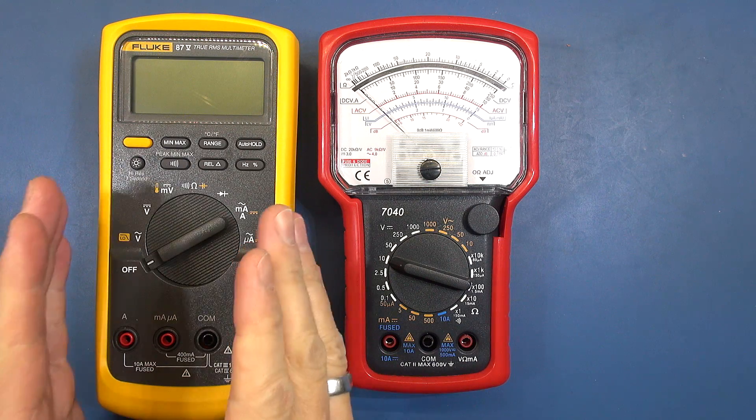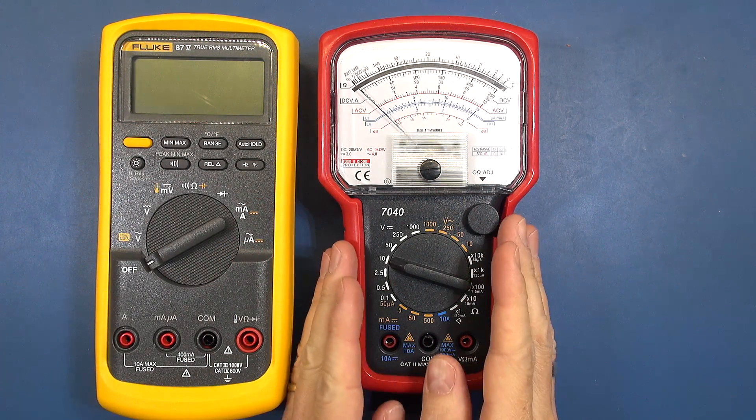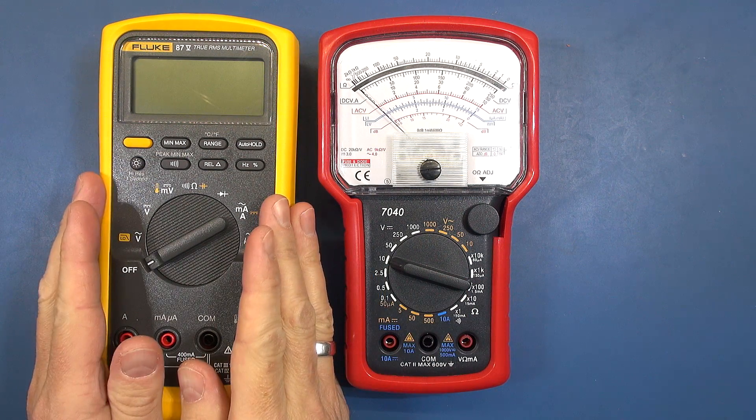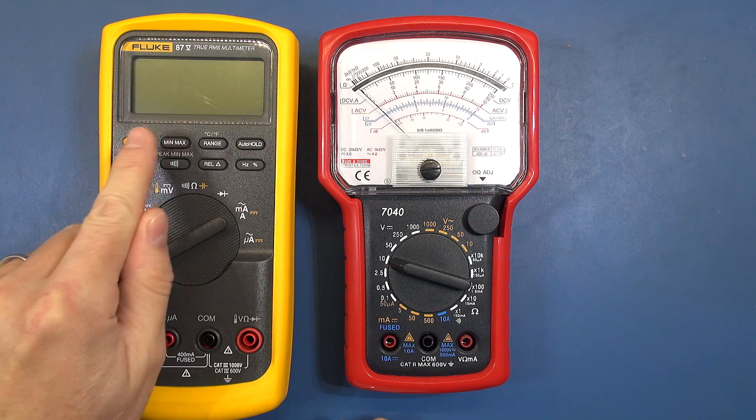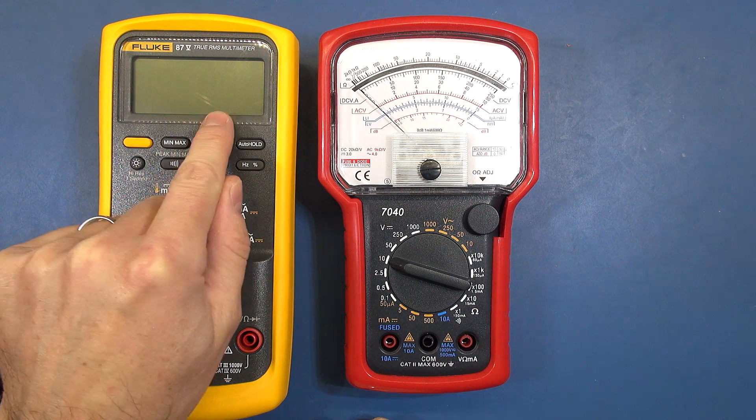In this comparison we're going to have the Fluke 87 series 5 versus the Mastic M7040. Now the reason I've selected the Fluke is because it does have a fairly nice update speed on the digital display and a really nice fast bar graph.